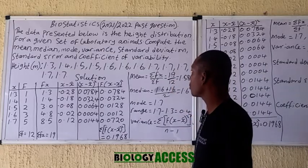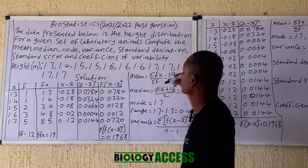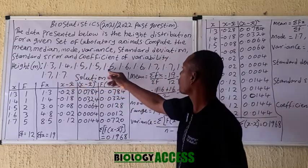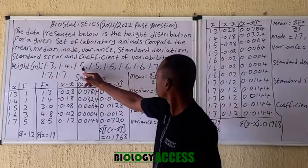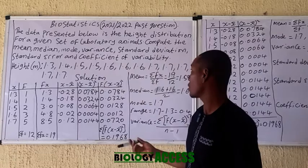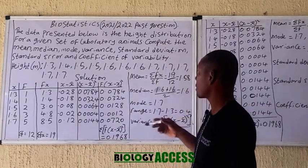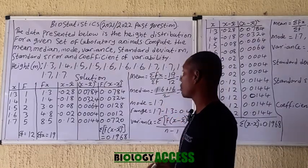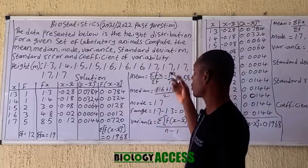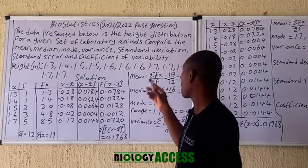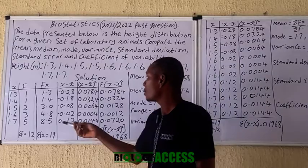For the median, I count the positions: 1, 2, 3, 4, 5, 6, 7 — giving us 12 values total, so the median is the average of the 6th and 7th values. Divide by two to get your median value. For the mode, you already know it is the most frequently occurring number, which is 1.7.